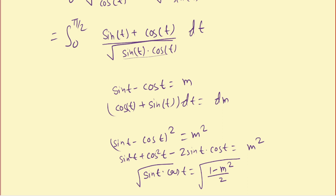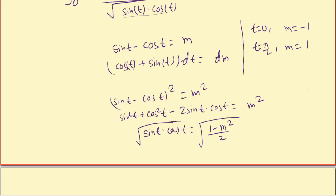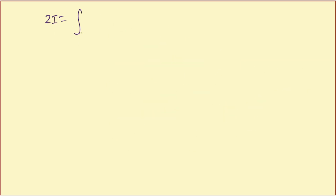We've converted everything in terms of m. Now we change the limits: for t = 0, m = −1, and for t = π/2, m = 1. So we get 2I = ∫ from −1 to 1 of dm / √((1 − m²)/2).